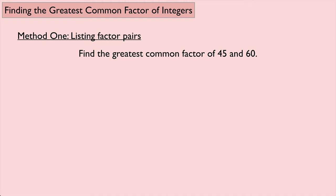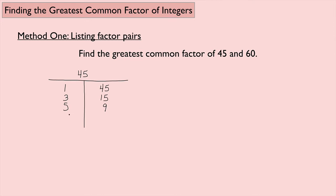I'm going to list all of the factor pairs for each number, starting with 45. I'll make a little chart and start with the smallest integer, which is 1 — so 1 times 45 is 45. 2 doesn't work. 3 works: 3 times 15 is 45. 4 does not go into 45, but 5 does: 9 times 5 is 45. 6, 7, and 8 don't work. 9 works, but we already have 9 — once you start to repeat, you know you're done.